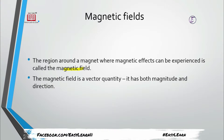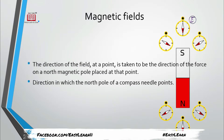So, to explain magnetic fields, we need both magnitude and direction — it is a vector quantity. Suppose this is a magnet and this is a compass. The north pole is always shown by the red end, while the south pole is shown by the white or uncolored end.